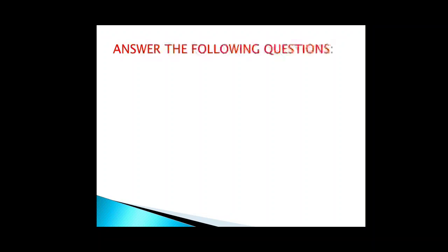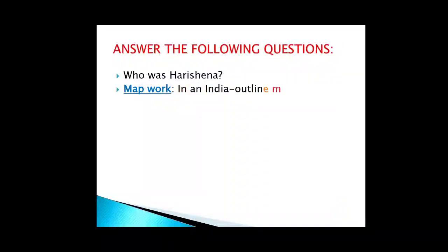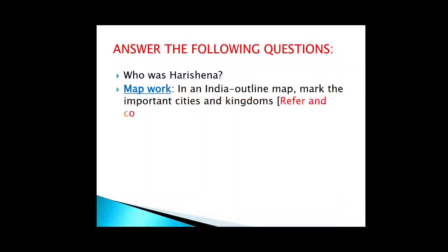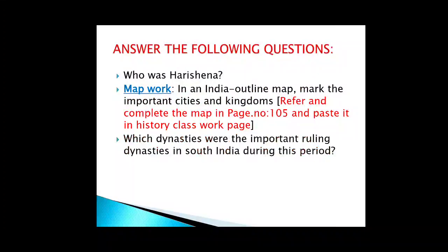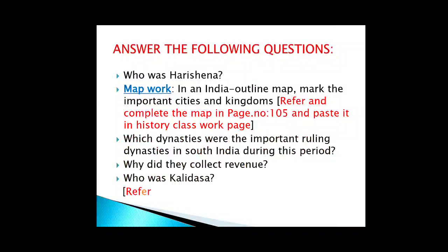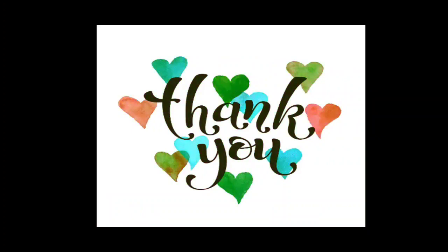Based on this video, children, there are a few questions. First: who was Harishena? Mapwork: you have to complete the mapwork on an India outline, marking the important cities and kingdoms — refer to page 105 and paste it in your classwork. Which dynasties were the important ruling dynasties in South India during this period? Why did Samantas collect revenue? Who was Kalidasa? For this question, you can refer to page 110 in your history book. Thanks for watching the video. Keep watching.